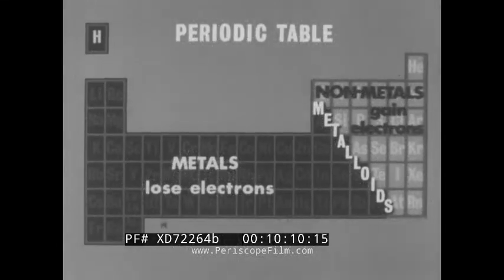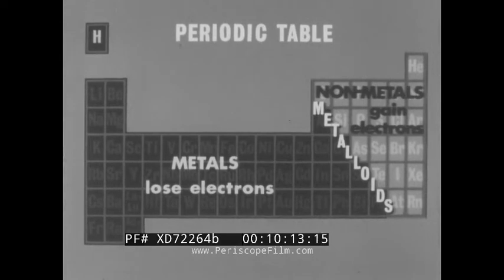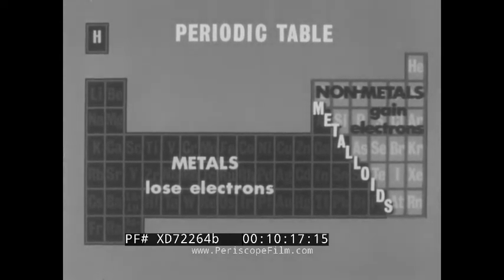Here is a photograph of the arrangement of atoms in platinum, magnified more than a million and a half times, in which a close packing arrangement is suggested. This close packing results from the tendency of metals to lose electrons.